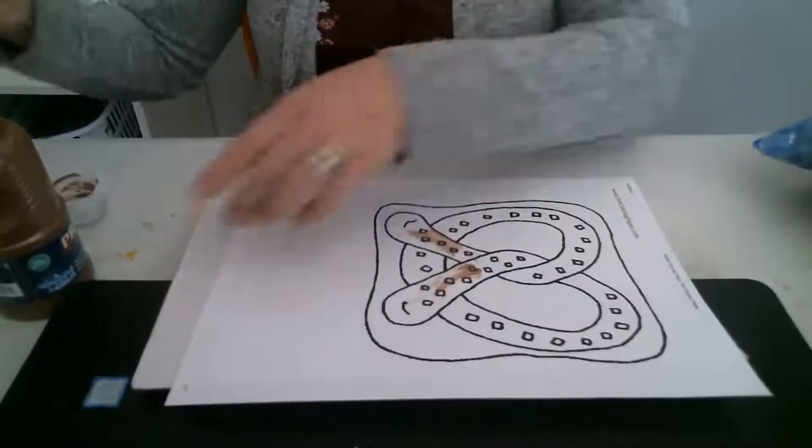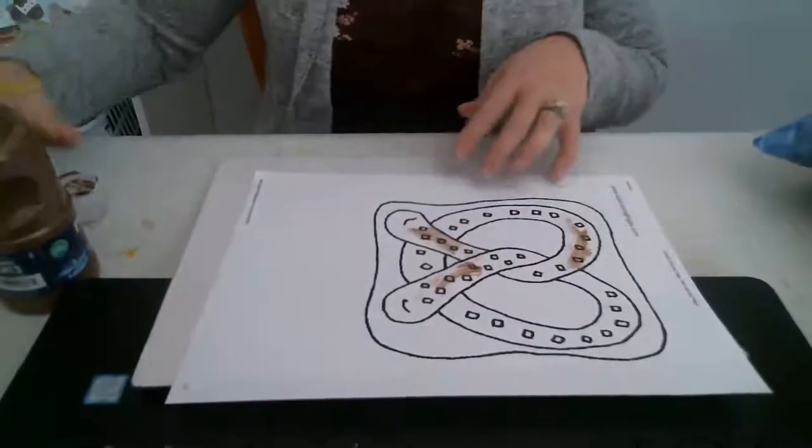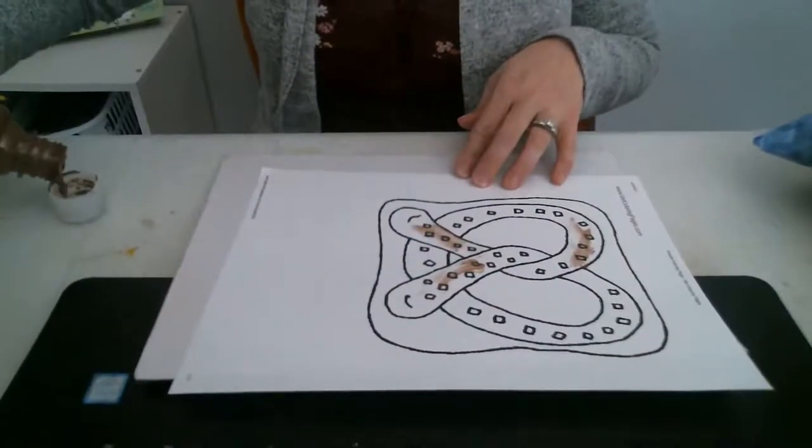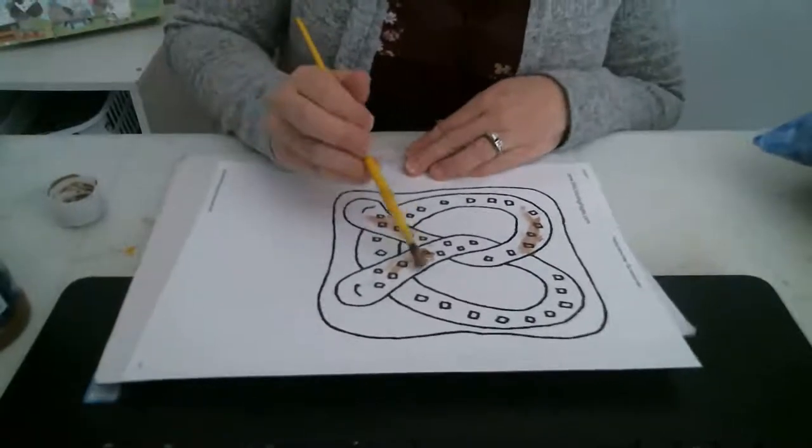So, now the outside of your pretzel, when you buy pretzels, they're brown, right? That's because they're baked. And the inside is usually white, kind of like red.